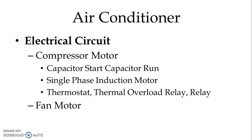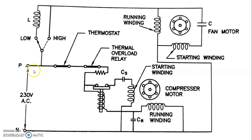Another component is the fan motor. Now let us see the diagram of the electrical circuit, which will make it more clear. We have a single-phase supply — phase and neutral, 230V AC — given to the circuit. The compressor motor is the main or major electrical part of the air conditioner. It is a capacitor start, capacitor run motor.